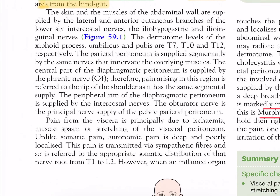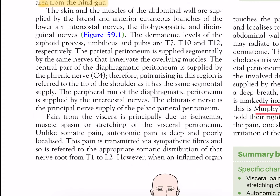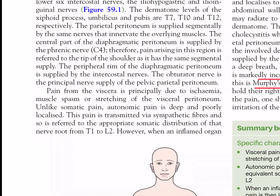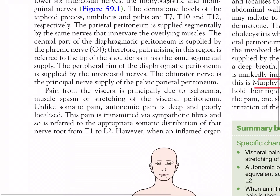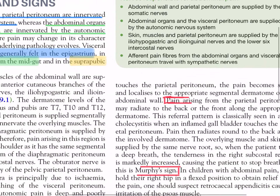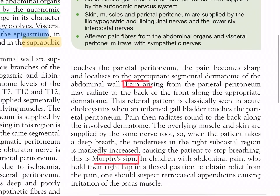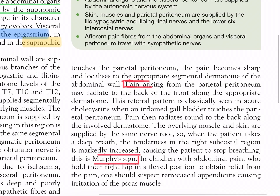The peripheral rim of the diaphragmatic peritoneum is supplied by the intercostal nerves. The obturator nerve is the principal nerve supply of the pelvic parietal peritoneum. Pain from the viscera is principally due to ischemia, muscle spasm, or stretching of the visceral peritoneum. Unlike somatic pain, autonomic pain is deep and poorly localized. This pain is transmitted via sympathetic fibers and is referred to the appropriate somatic distribution of that nerve root from T1 to L2. However, when an inflamed organ touches the parietal peritoneum, the pain becomes sharp and localized to the appropriate segmental dermatome of the abdominal wall.